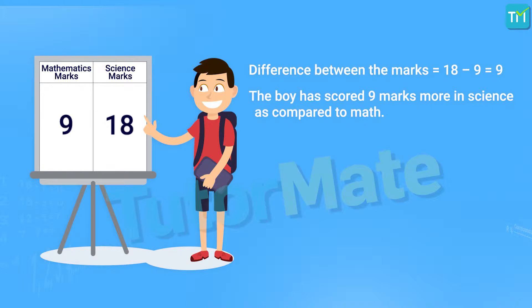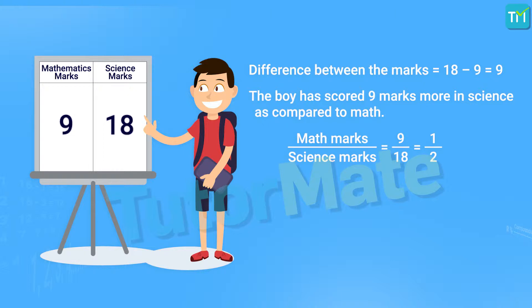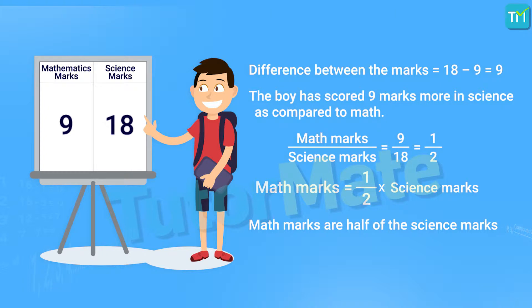Another way of comparison is to figure out how many times more the science marks are compared to the math marks. What we do here is find the ratio of the math marks to the science marks, which is 9 by 18. Reducing this fraction to its lowest form gives 1 by 2. So math marks upon science marks equals 1 by 2, which means math marks are half of science marks.